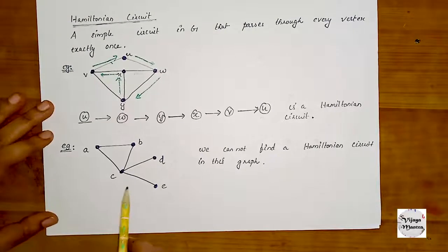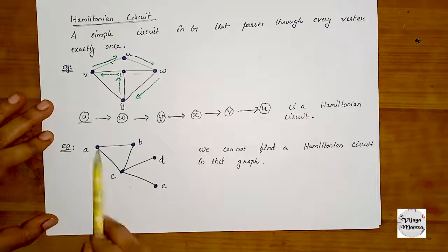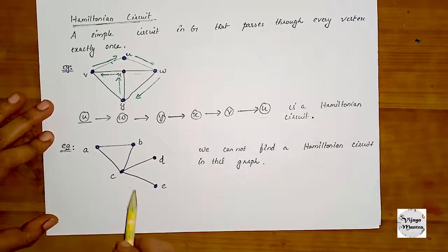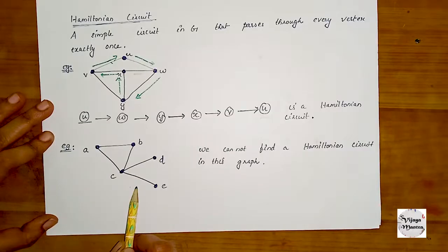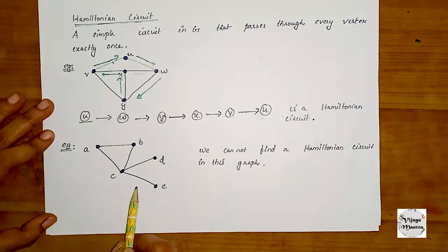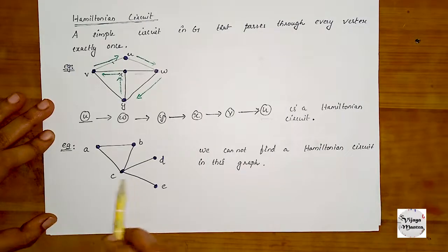Now here is a graph with vertices A, B, C, D, E. In this graph, we have to make a Hamiltonian circuit. The condition is that if you have all the edges, you will be able to do it.